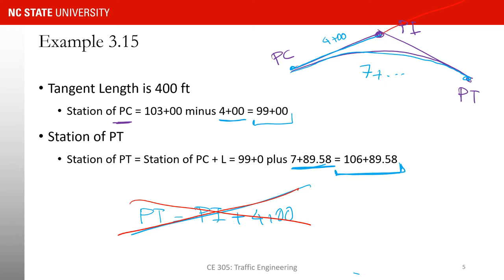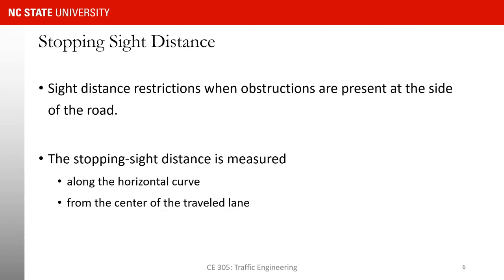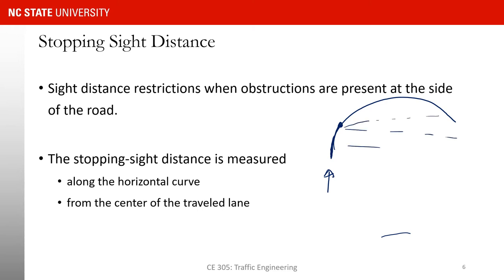Let's move on and start thinking about stopping sight distance on a horizontal curve. If you are traveling on a curve, what limits how much you can see? If there is nothing obstructing you, the sight distance is large because you can see far ahead. But often you have some obstruction — maybe a retaining wall or rocks on a mountainous road.